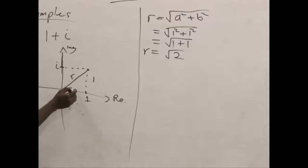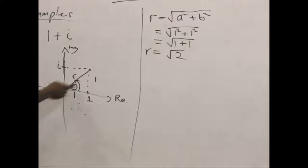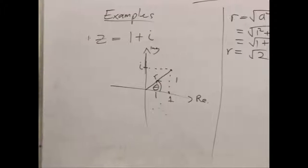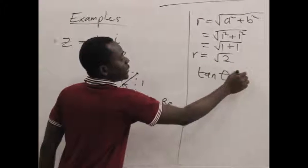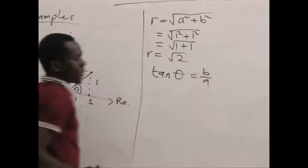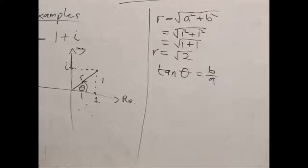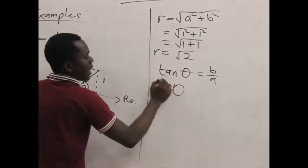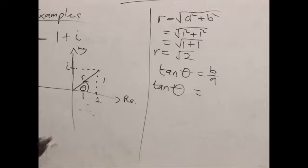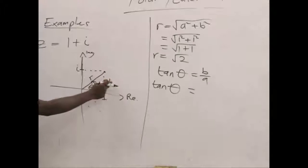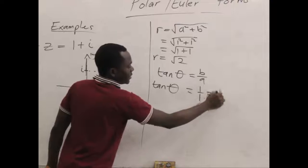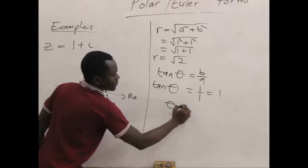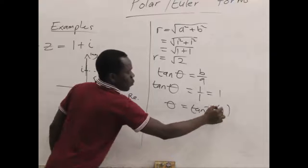Now the second thing we need to find is the angle theta which the complex number makes with the positive real axis. And we also know that to find theta we need to use tan of theta which is equal to B over A in this case. So our tan theta will be 1 over 1 because we have our B to be 1, our A also equals 1. So we have 1 over 1 which is eventually 1. So theta becomes tan inverse of 1.